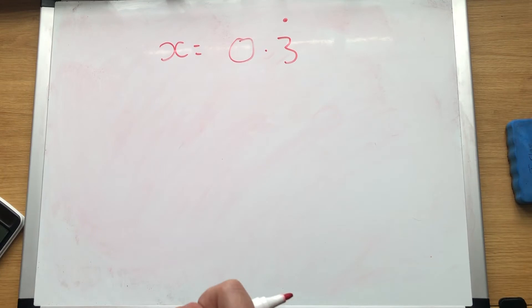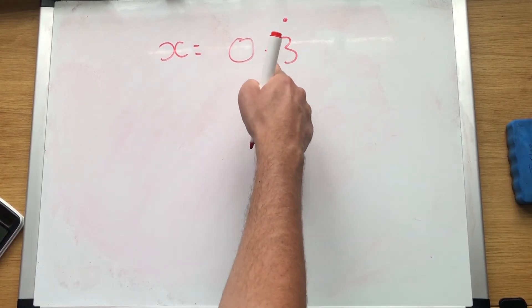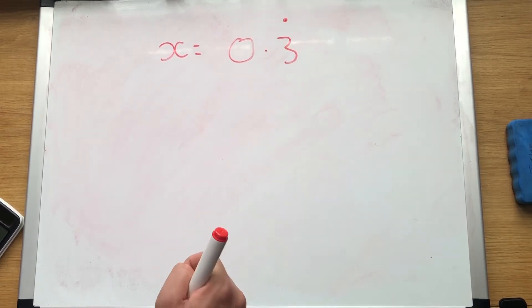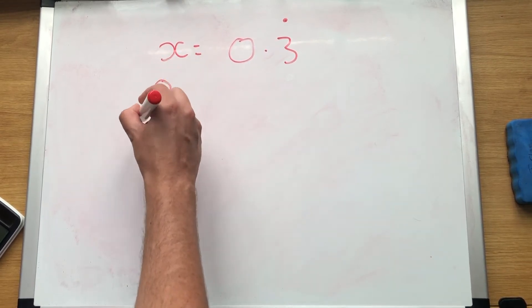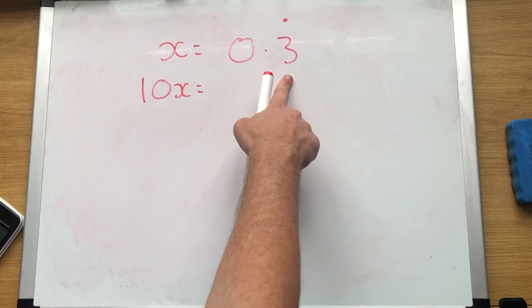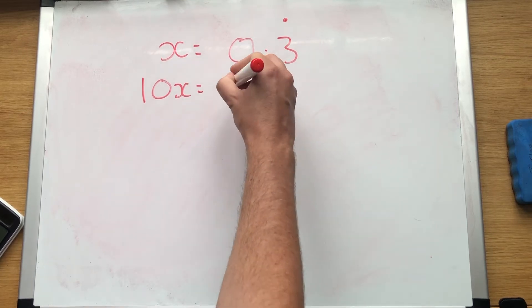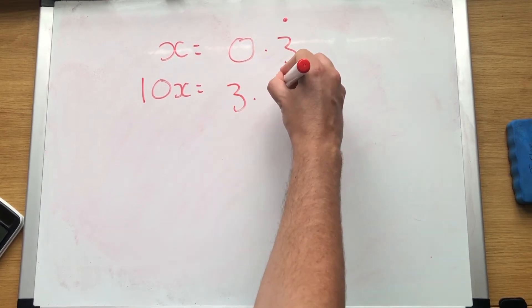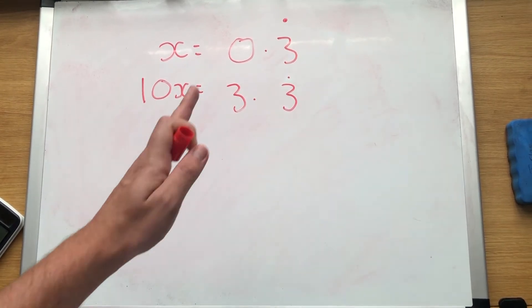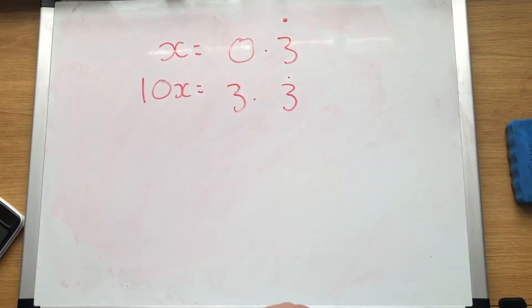X equals 0.3 recurring. What we now need to do is count how many numbers are after the decimal place. There is one number after the decimal place. So we want one 0 and then a 1. Because there's one number after the decimal place, everything moves 1 to the left. We're timesing it by 10. So everything's moving 1 to the left. Decimal point stays in exactly the same place. Everything's moving 1 to the left. This is 3 forever and ever, so when you move it to the left, it still is 3 forever and ever.